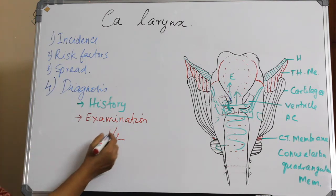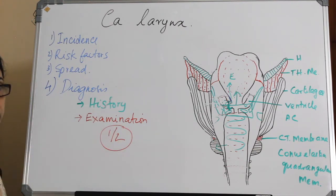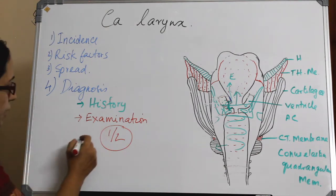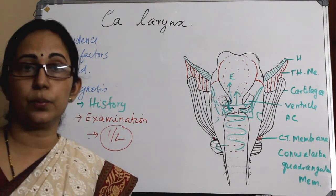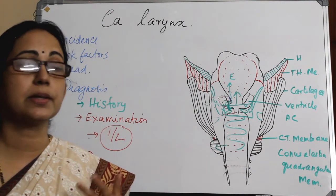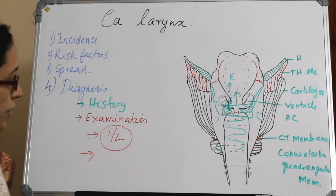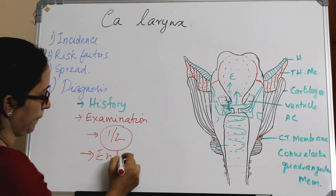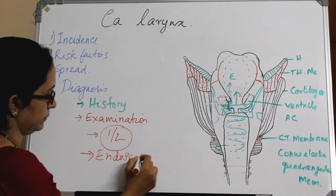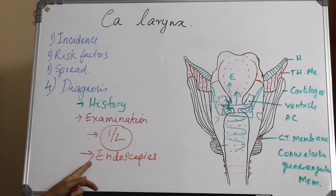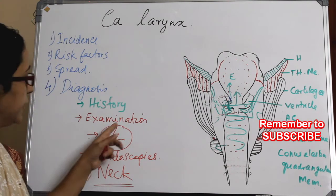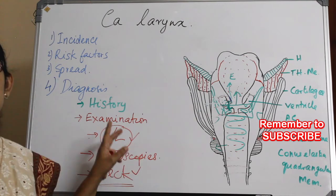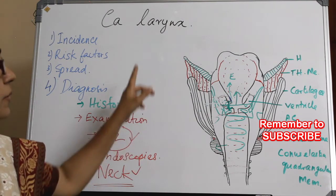Indirect laryngoscopy is very, very important. The next tool is Hopkins rod examination — you can use Hopkins rod telescopes, either flexible or rigid endoscopes. Examination of the neck is also very important. Neck examination and indirect laryngoscopy are the most important components of the physical examination of a patient with CA larynx.